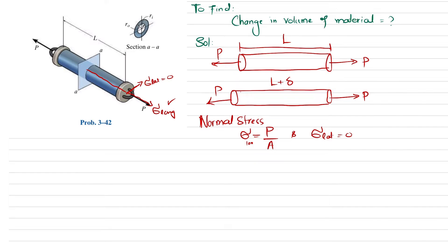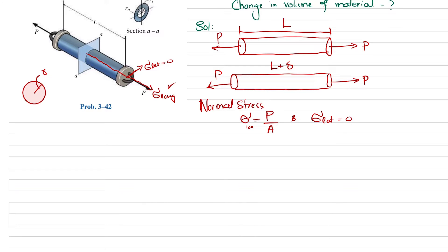Due to this longitudinal stress, there will be a change in volume because the length will increase and the diameter will decrease. The change in volume is: delta V equals A times delta-L plus 2*pi*r*L times delta-r. Here, A times delta-L is the longitudinal change in volume, while 2*pi*r*L times delta-r is the change in volume along the lateral direction.